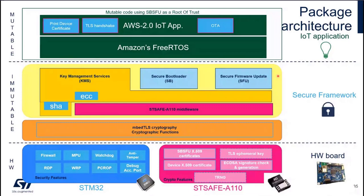All of this relies on a secure framework brought by Xcube SBSFU. We have a secure bootloader that ensures the authenticity of the application before running it. We have secure firmware update, enabling over-the-air update. And we have KMS — Key Management Services — to expose cryptographic services to Amazon FreeRTOS. Services like hash (SHA-256) will stay on the STM32 side, but elliptic curve cryptography will be offloaded to the STSAFE via the STSAFE A110 middleware.